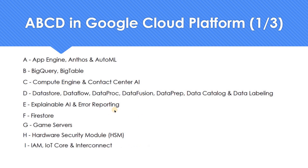Moving on to I. I for IAM — Identity and Access Management — the most important horizontal service. If you don't know IAM, it becomes very difficult in GCP. IoT Core — there are more IoT devices than the entire population of the world, and Google provides a serverless IoT Core service. And if you want to connect your on-premises environment with GCP, Interconnect would be a good choice.